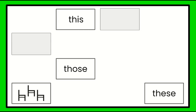Chairs. That's more than one. Which determiner goes with more than one — those or these? Well, it's not far away, so it must be — you guessed it — these chairs.